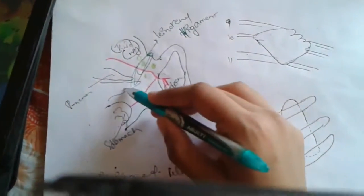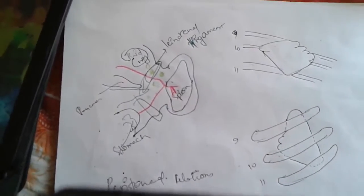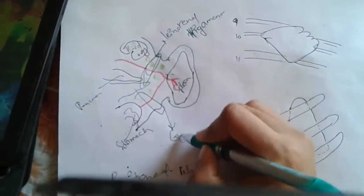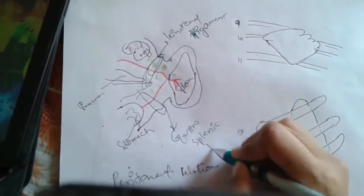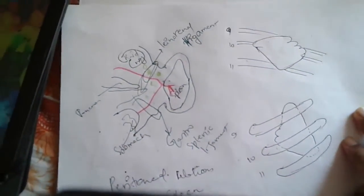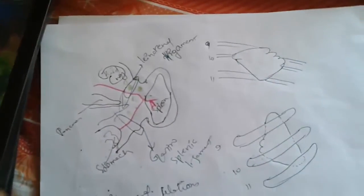The next ligament is the gastrosplenic ligament, which extends from the hilum of the spleen to the stomach. The gastrosplenic ligament contains the short gastric vessels. These are all the peritoneal relations of the spleen.